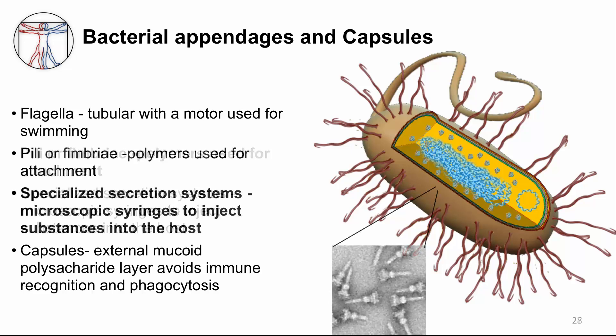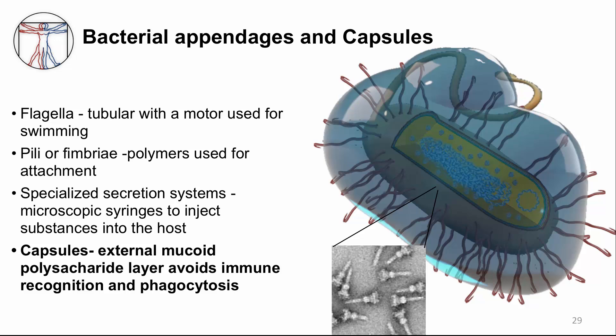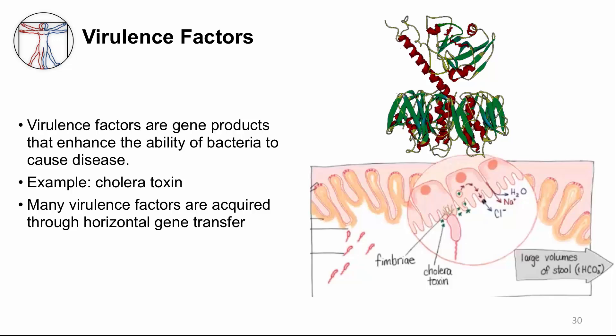Several types of molecular syringes, known as secretion systems, may be embedded in the envelope. These can secrete or transfer molecules from the bacteria to the host cells. Finally, a very conspicuous external addition to the envelope is a mucoid substance made of polysaccharides called a capsule. It can help bacteria avoid being seen by our immune systems by hiding their surface structures, prevent them from drying out, or make them difficult to phagocytose by our white blood cells.